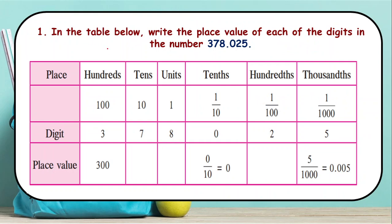Here in the table below we have to write the place value of each digit in the number 378.025. We have already prepared a table, we just need to fill up the blank spaces. In the column of tens we have 7, so it will be 7 into 10, which gives us 70.